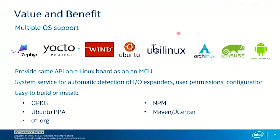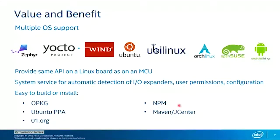Pretty much most of them are supported by UPM, and we provide packages that make it very easy to install the library so you don't have to build from source. For the Yocto project we provide IPKs via OPackage. We have a PPA for Ubuntu, RPMs for Wind River, and JavaScript developers can get our libraries through NPM. For Java and Android Things developers, we have integration with Maven and JCenter, including Android Studio support.